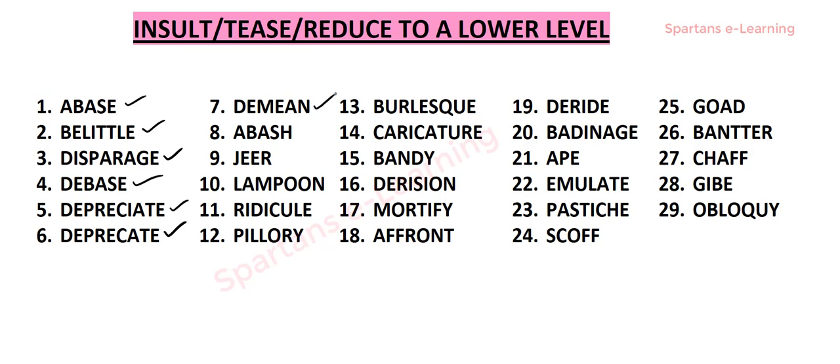Our next word is demean. Demean is a verb meaning to degrade or to humiliate. Example: he felt that he would demean himself if he replied to the scurrilous letter. Our next word is abash. Abash is a verb meaning to embarrass. Example: he was not at all abashed by her open mockery.